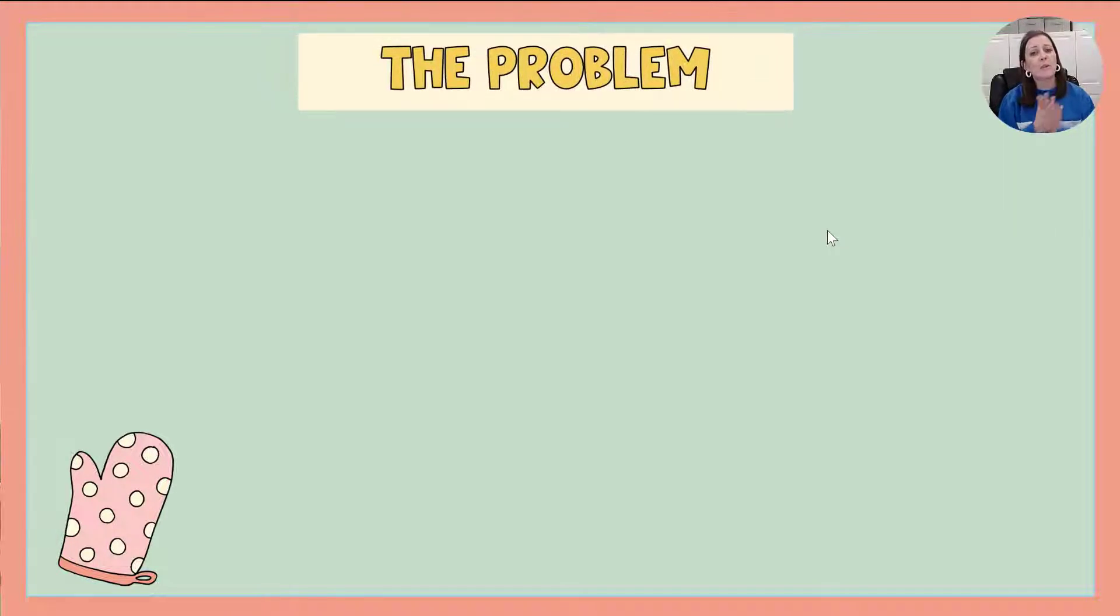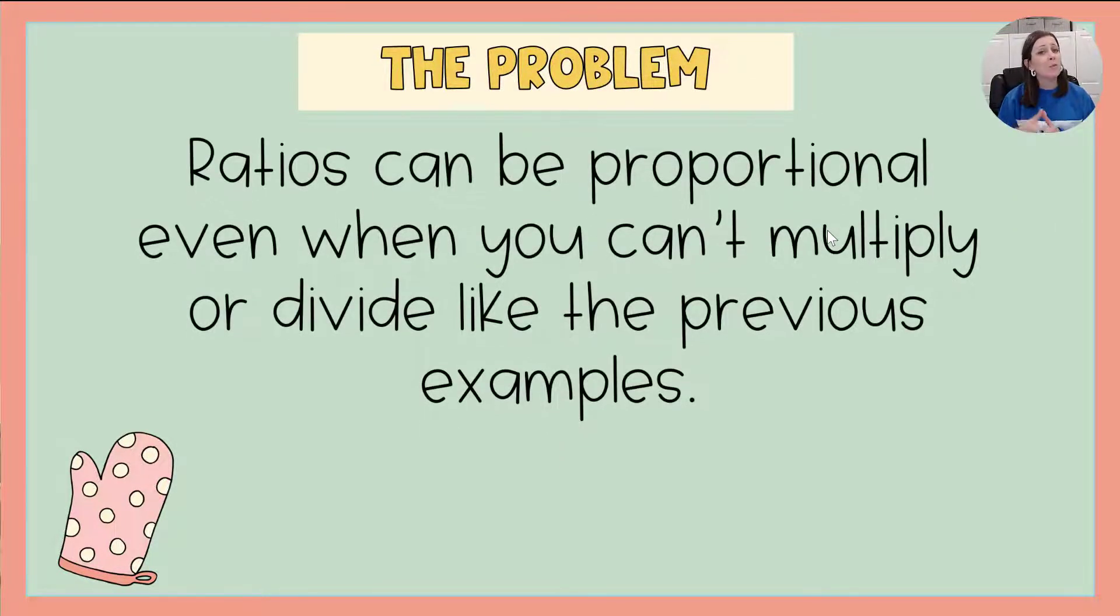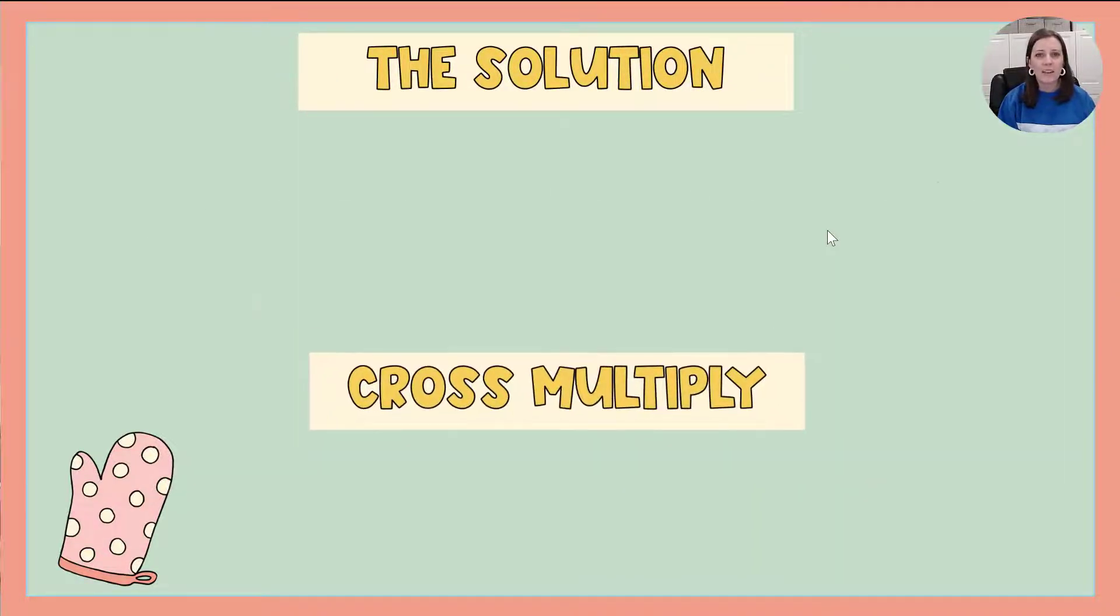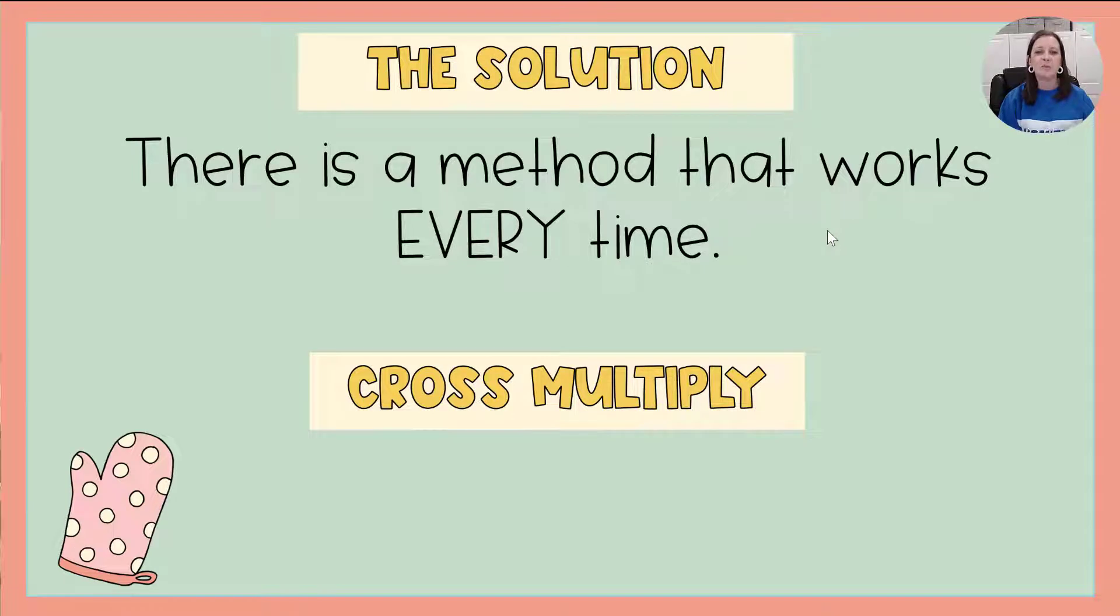Now we have a little bit of a problem that we need to discuss. Ratios can be proportional even when you can't multiply or divide like those previous examples. Remember we talked in our last video about simplifying, how there was a third option? Same thing here. We have a third option. Now you can simplify, but another option, another solution, the method that works every time is to cross multiply.